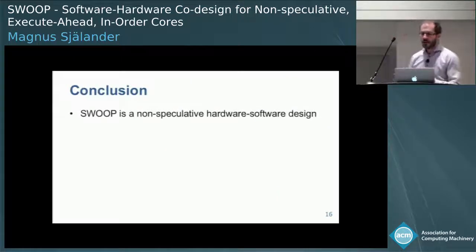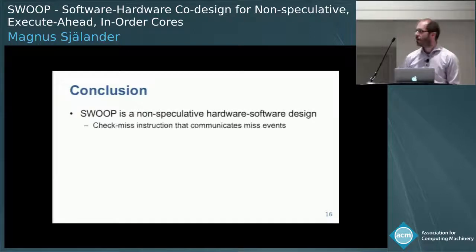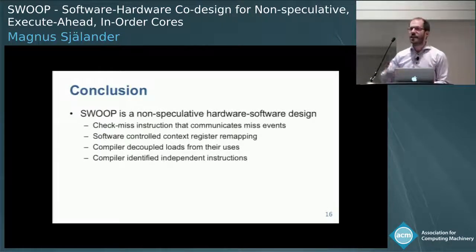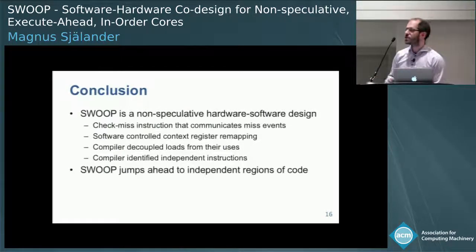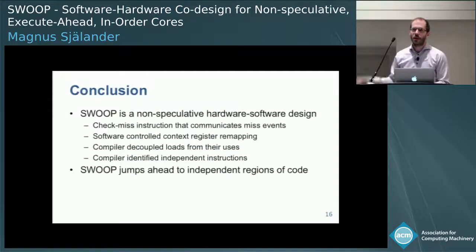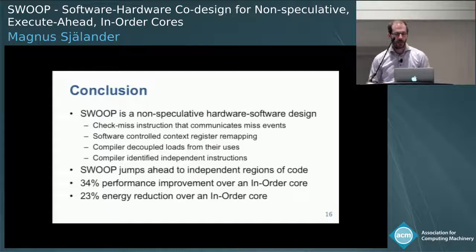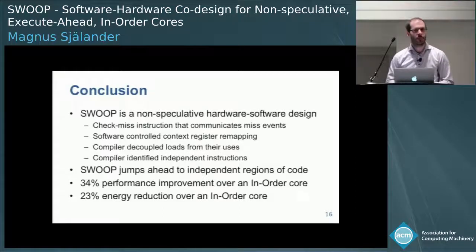To conclude, Swoop is a non-speculative hardware-software co-design where we introduce a new check-miss instruction and a simple software-controlled context register mapping, together with a compiler that decouples loads from their uses and identifies independent instructions or code regions. Doing this, we're able to jump ahead in the code — instead of executing sequentially, we jump ahead to independent code and execute it earlier. We improve performance by 34% and reduce energy by 23% compared to an in-order core.